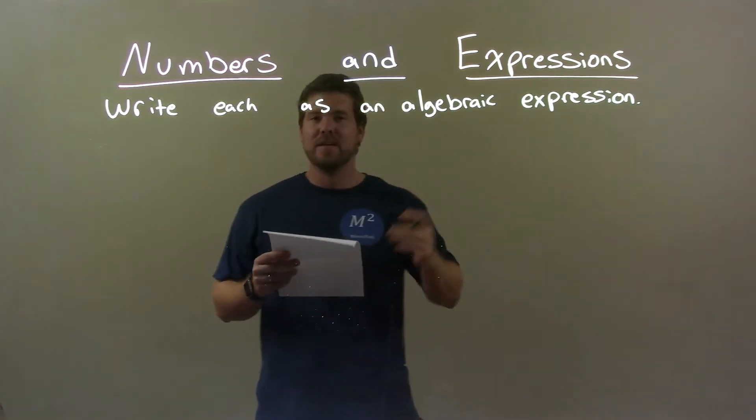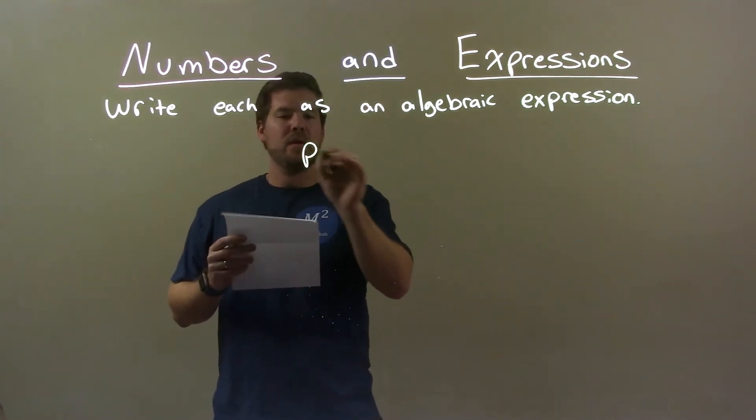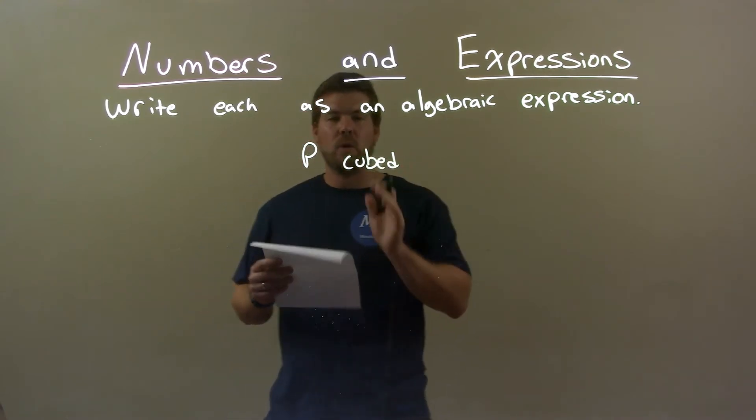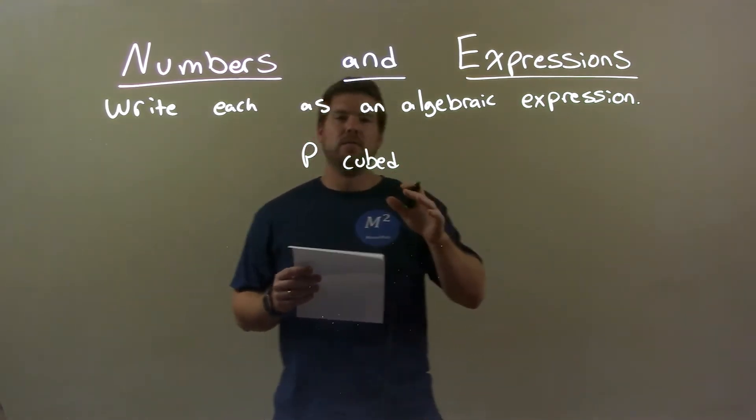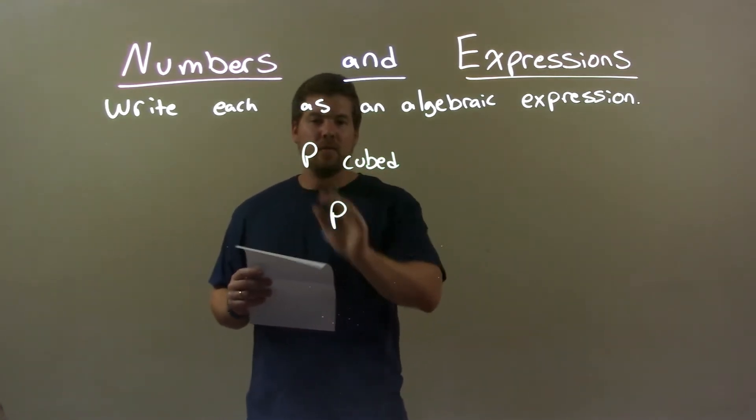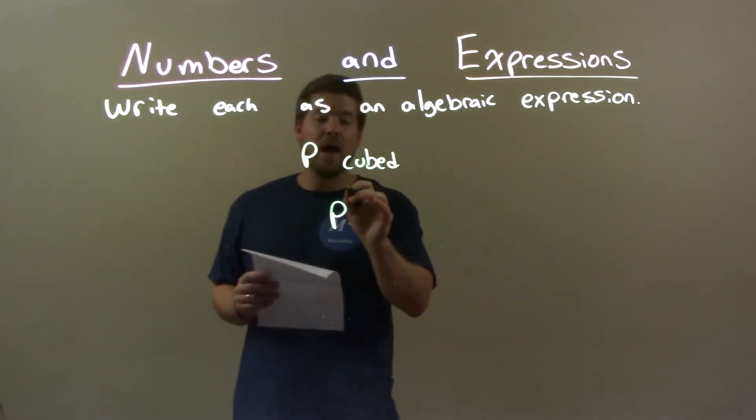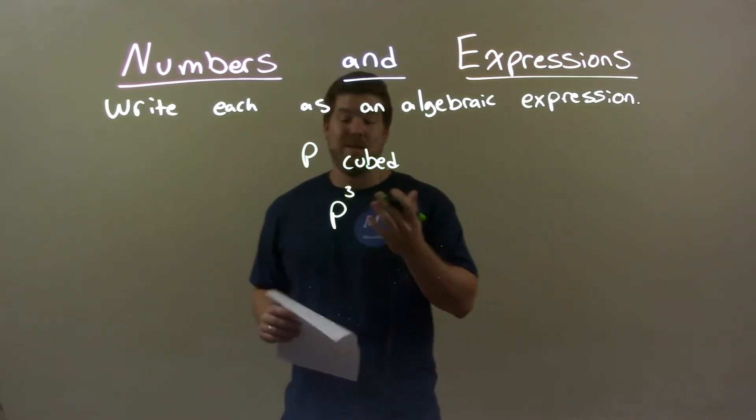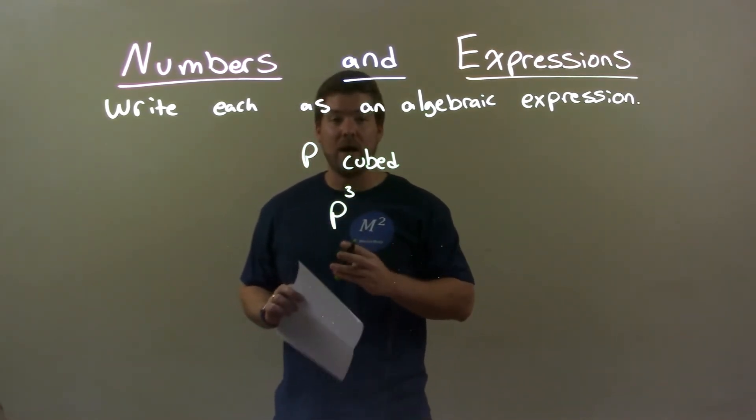If I was given this: p cubed. I want to write p cubed as an algebraic expression. We start with p - that's the variable - and then cubed is the exponent to the third power. And that's it, our final answer is p to the third power.